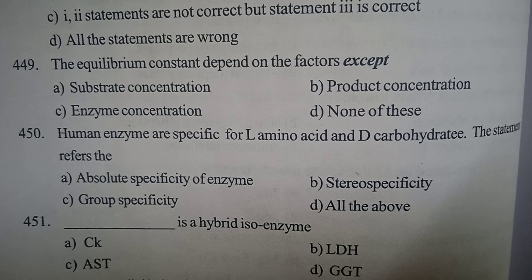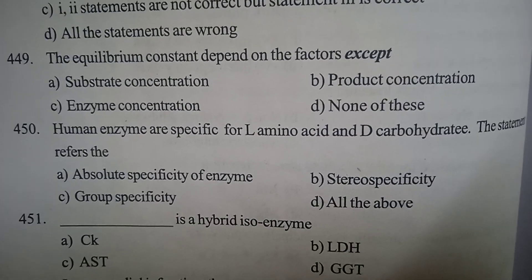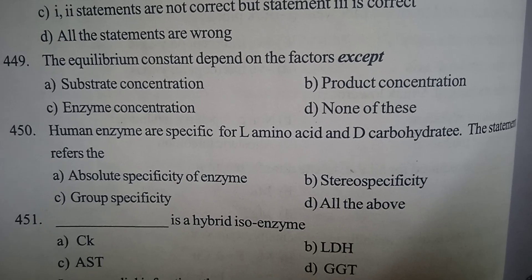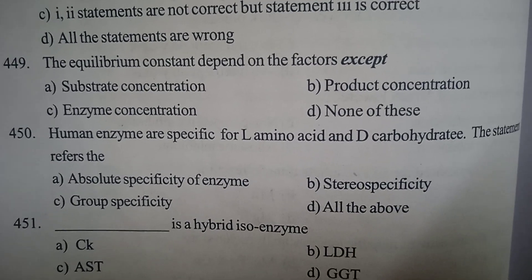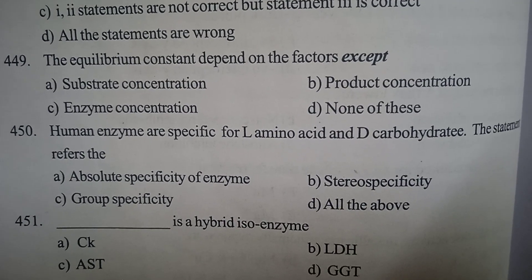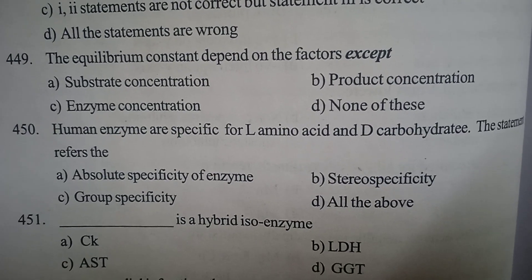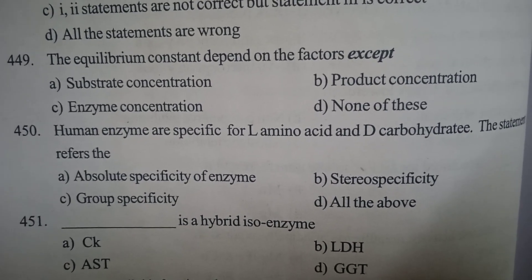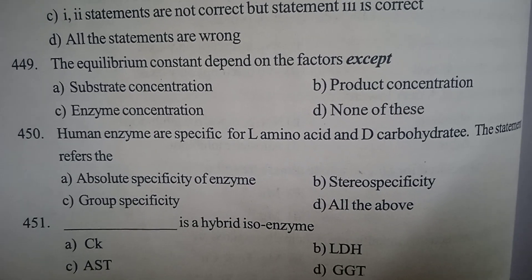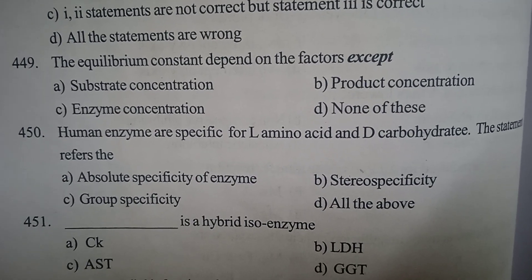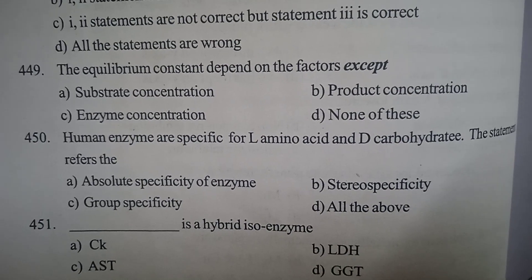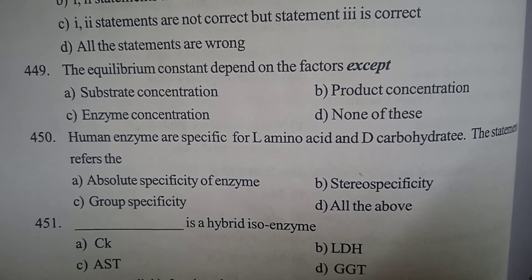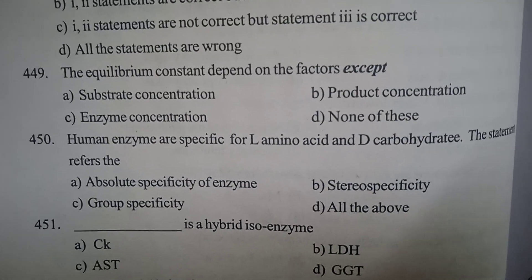Question 6: Which is a hybrid isoenzyme? Option A: CK (Creatine kinase), Option B: Lactate dehydrogenase, Option C: Aspartate transaminase, Option D: Gamma glutamyl transferase. Correct answer: Option B, Lactate dehydrogenase is the hybrid isoenzyme.